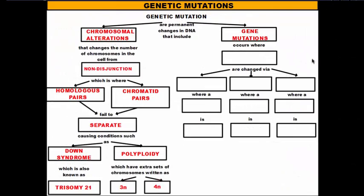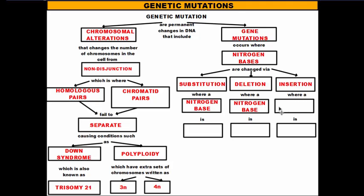Gene mutations are the ones you're probably more familiar with. This is where we actually alter parts or sequences in the DNA. This occurs when nitrogen bases — adenine, thymine, guanine, and cytosine — are changed. The order is changed in one of three ways: substitution, deletion, or insertion. All of these occur in the nitrogen bases on the DNA strand. Substitution is when one base is replaced or switched out by another base, kind of like in sports when you get subbed out and someone comes in for you. Deletion is when a base gets removed — if you delete something on a document, you're removing it. Insertion is when a base is added.